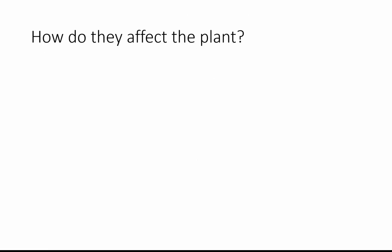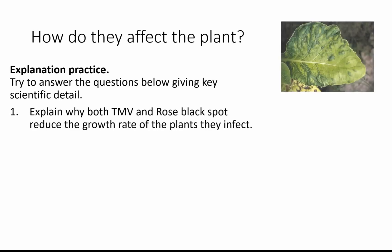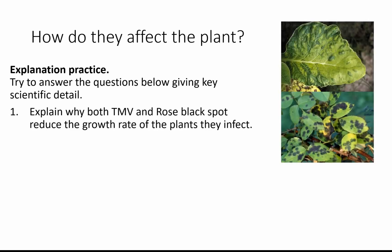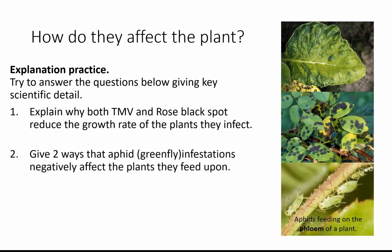Here are two questions to answer in as much scientific detail as you can. Explain why both tobacco mosaic virus and rose black spot reduce the growth rate of plants they affect. Also give two ways that aphids might negatively affect the plants they feed on — this one might require you to think a little more. Spend about three to four minutes on this, then look at the answers on the next slides.